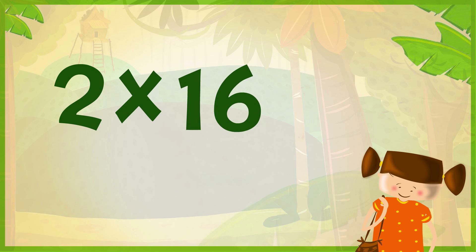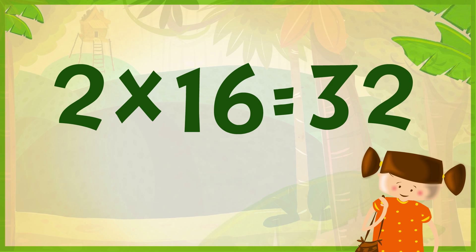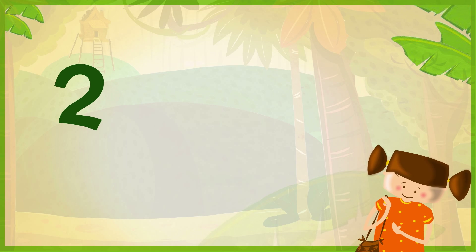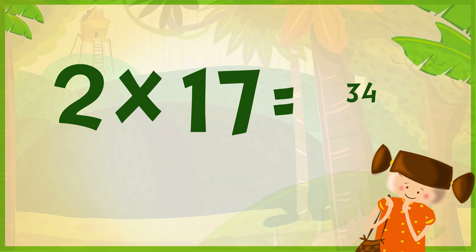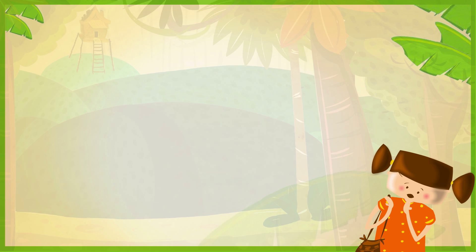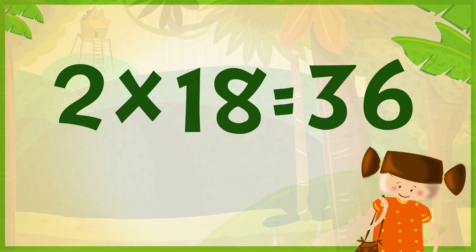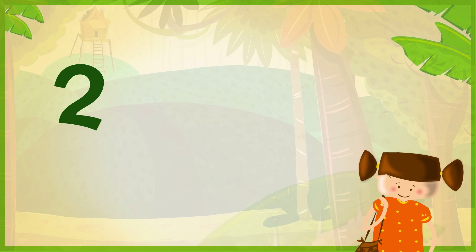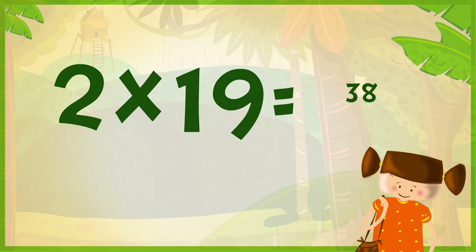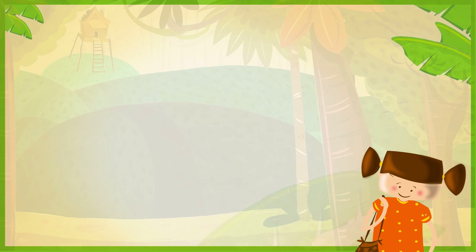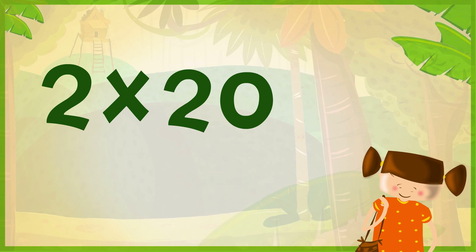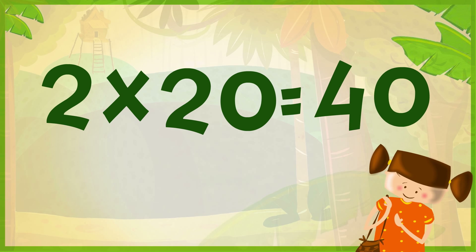2 x 16 is 32, 2 x 17 is 34, 2 x 18 is 36, 2 x 19 is 38, 2 x 20 is 14.